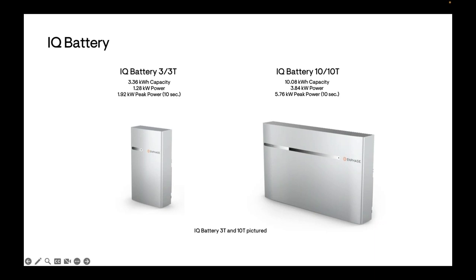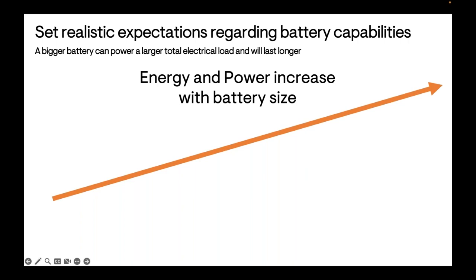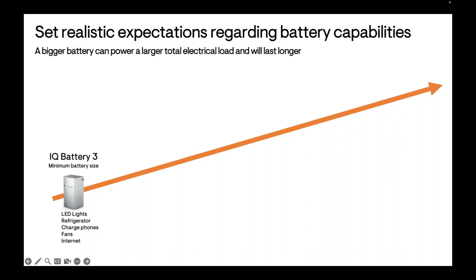When setting expectations with your homeowner, it's important to be realistic. If they try to power too many things, the system is likely to collapse and you'll get a phone call. In order for them to have a good experience and refer you more business, set realistic expectations. The IQ Battery 3 alone requires keeping electrical loads to a minimum — it's really meant as a building block, not a standalone solution for most homes. It can work if the customer just wants to power a couple of small devices: efficient LED lights, a modern refrigerator, phone charging, or fans.